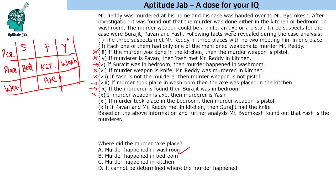If the murder took place in the washroom — that did not happen in the wardroom condition — and if Pavan and Mr. Reddy met in the kitchen, then Surajit had the knife. Since Pavan and Mr. Reddy met in the kitchen, Surajit had the knife, and therefore Yash must be having the pistol.